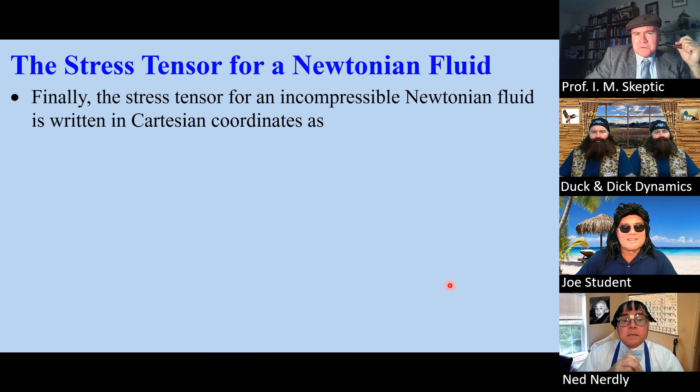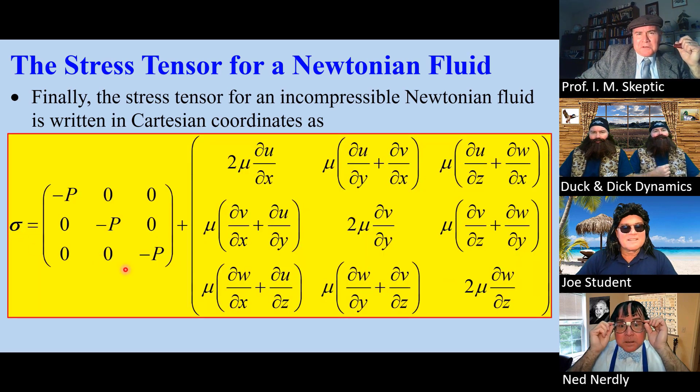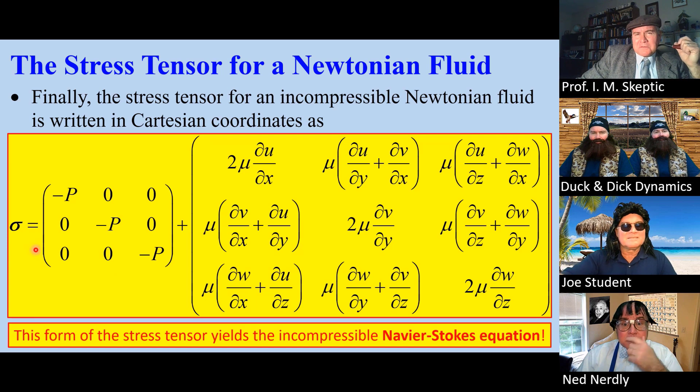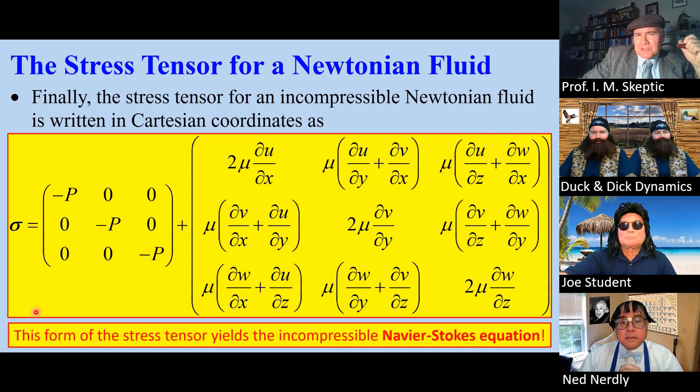Finally, the stress tensor for an incompressible Newtonian fluid is written in Cartesian coordinates as this, sigma, pressure stresses, and the viscous stresses. This is the stress tensor. This form of the stress tensor yields the incompressible form of the famous Navier-Stokes equation.